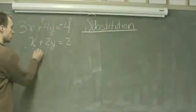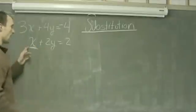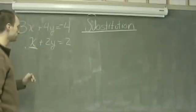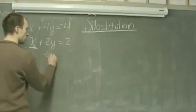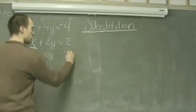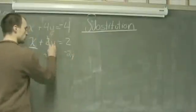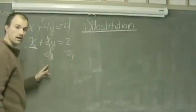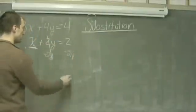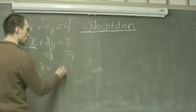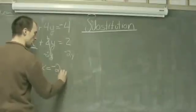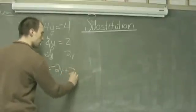I am going to solve algebraically for x in my second equation. Solving for x, I subtract 2y from both sides, which cancels the 2y on the left hand of the equation, leaving me with x equals negative 2y plus 2.